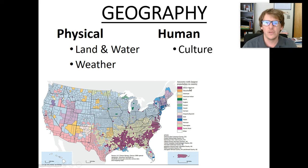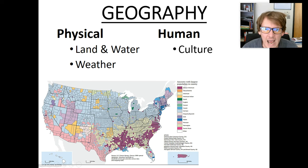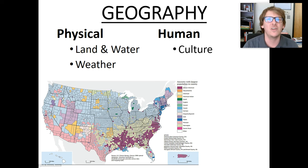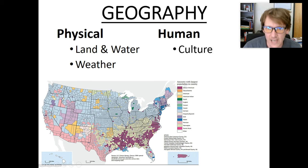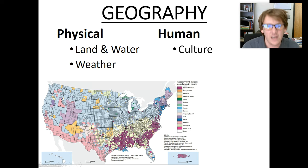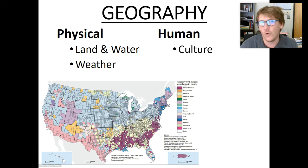Here we have ancestry with largest population. We can see Germans live mainly through this light blue area. The purple would be African-Americans — you could probably take a guess why African-Americans are the dominant population throughout this part of the country. We have a map, a tool that helps us understand the differences. Some people watching may know why African-Americans make up the majority throughout these southern states. If you didn't know, you could go through a textbook and find out. The main idea — it would be connected to slavery. Africans were brought into this region as slaves, so it's not surprising this region is still majority African-American.